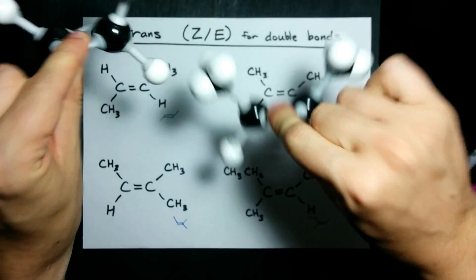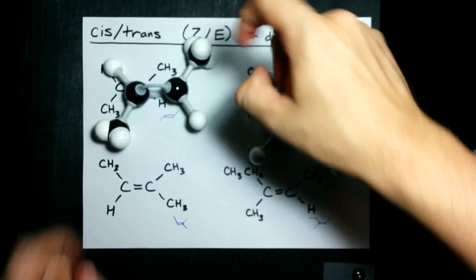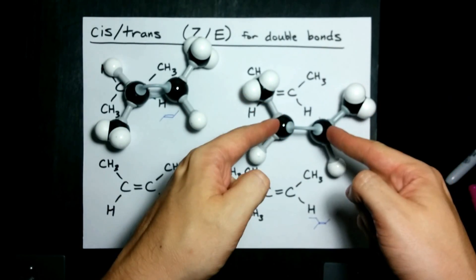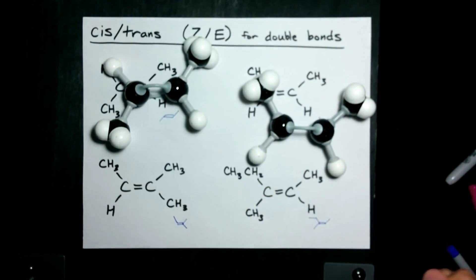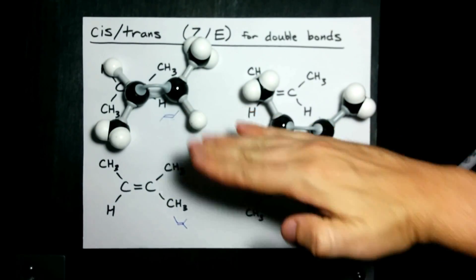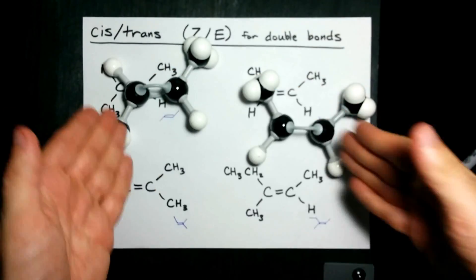But because double bonds can't rotate the same way that single bonds can, it means that these two, one where the CH3 groups are across from each other and one where the CH3 groups are on the same side of the plane of the double bond, are different.